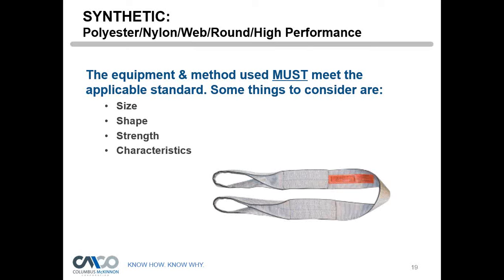Synthetic straps must be looked at carefully. There are different types — polyester, nylon, round, high performance — and that field is growing. Synthetics are light, easy to use, fairly inexpensive, and they reduce load damage because they're softer. However, they are subject to cuts and abrasions. Some drivers don't put an abrasion pad underneath the strap, so as the truck travels down the road and the load bounces, the load abrades the strap, which can eventually cut through it.